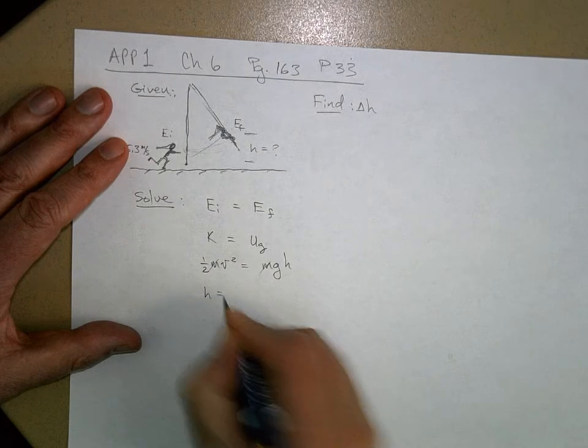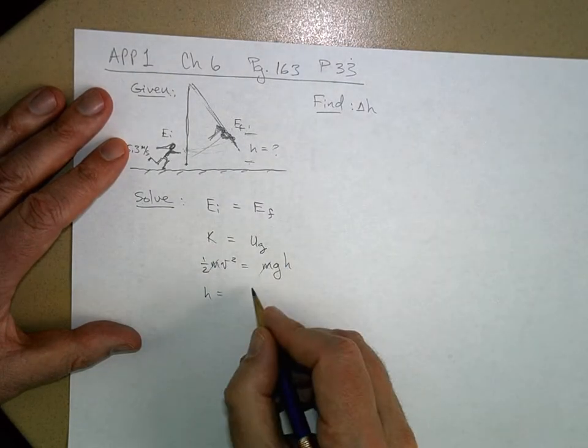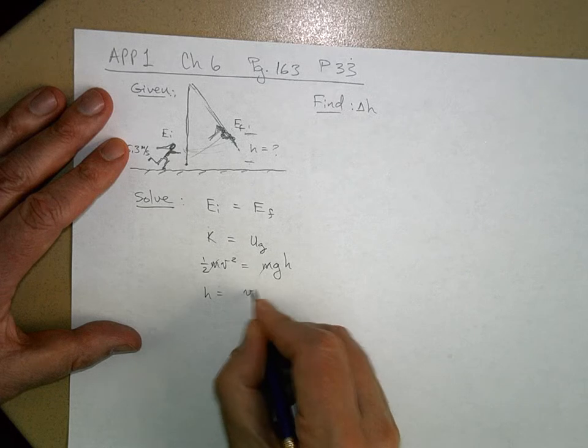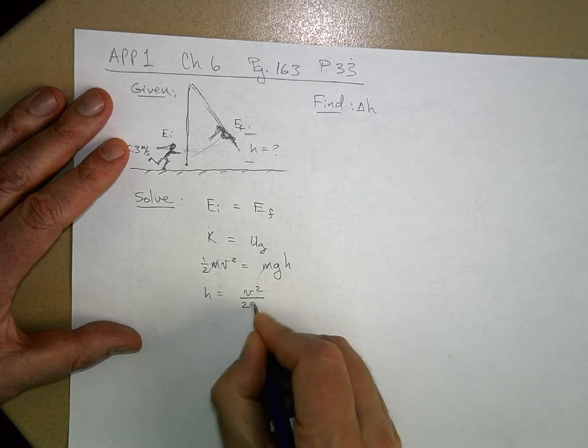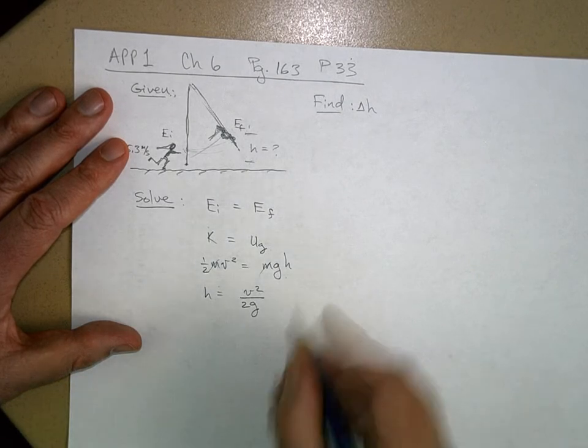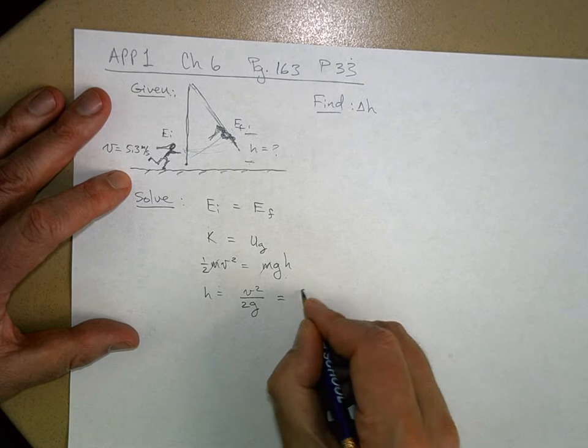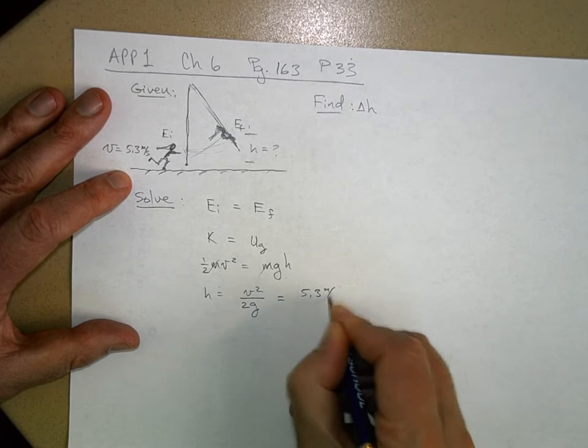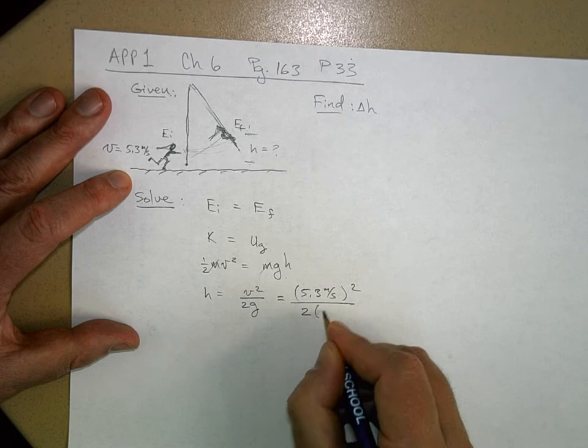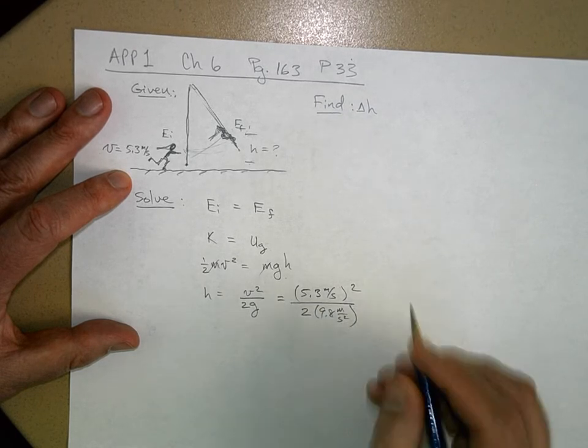And notice that we don't need to know what her mass is because it cancels out. And so her height above where she started is going to be equal to v squared over 2g. Just divide by g, and you get this. And we know everything.